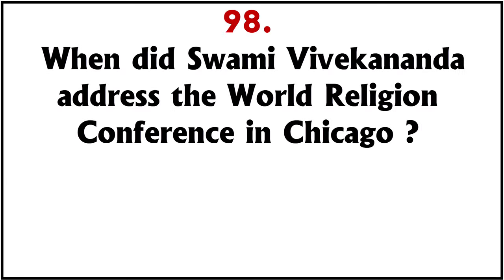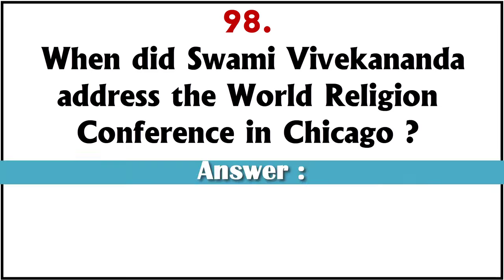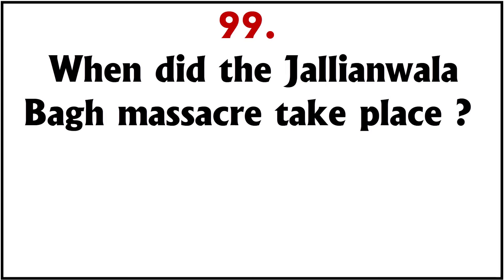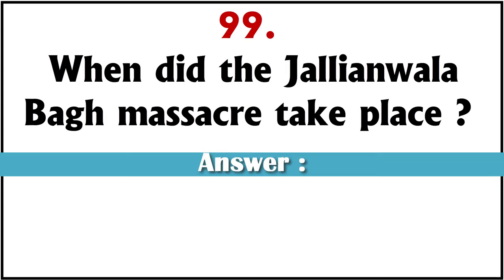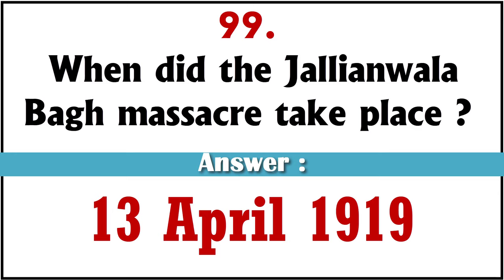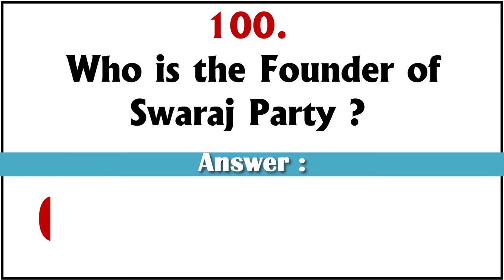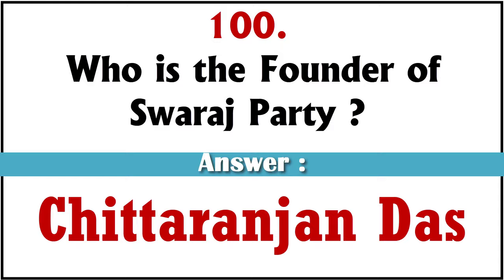When did Swami Vivekananda address the World Religion Conference in Chicago? In 1893. When did the Jallianwala Bagh massacre take place? 13 April 1919. Who is the founder of the Swaraj Party? Chittaranjan Das.